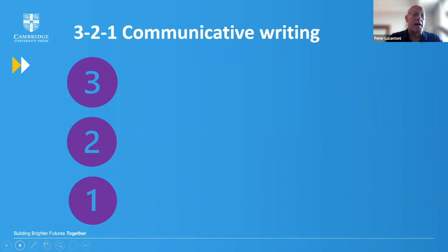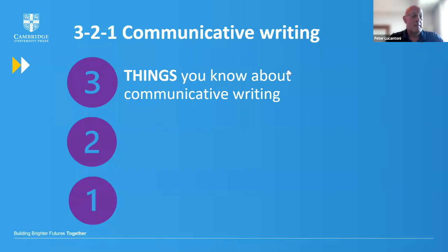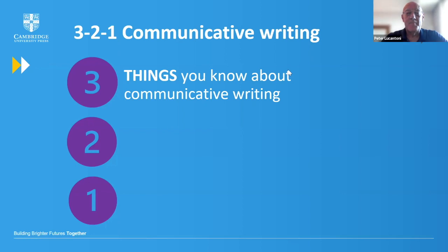What we're going to use it for now at the start is to find out what you already know. So the three means three things, three items, three points. I want you to think - please don't write anything yet - but think for about 45 seconds. Three things that you already know about communicative writing. What does it mean to you? Just think.